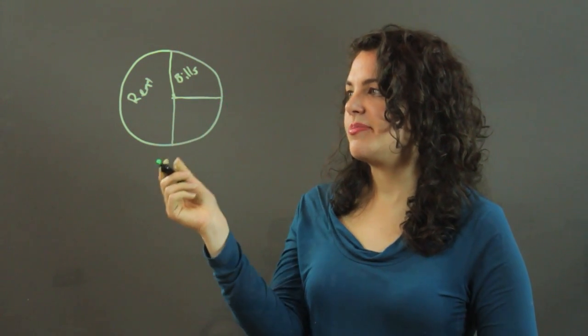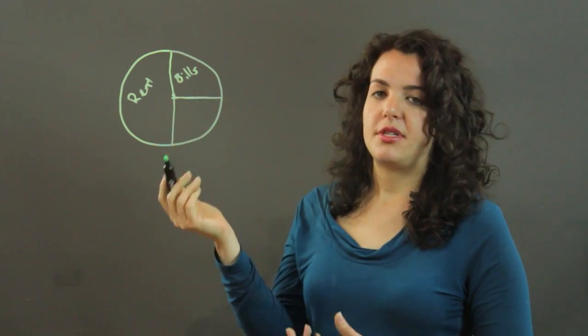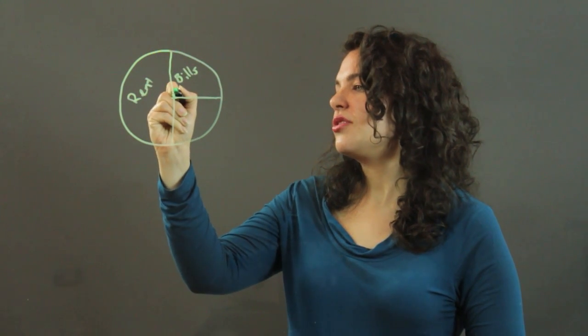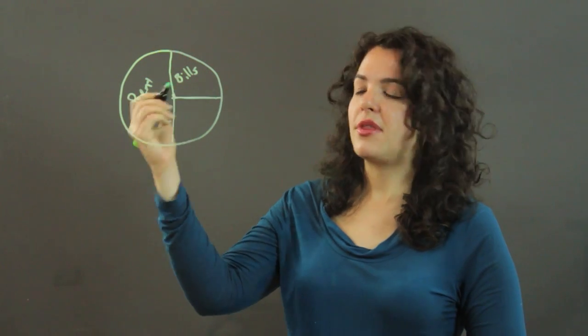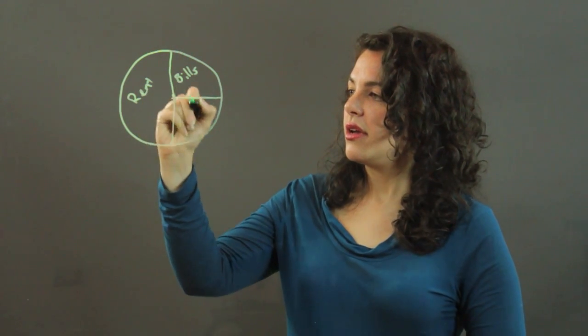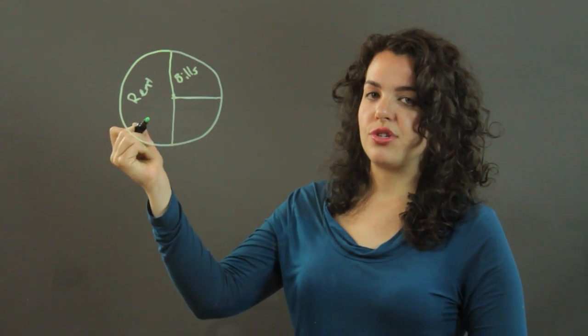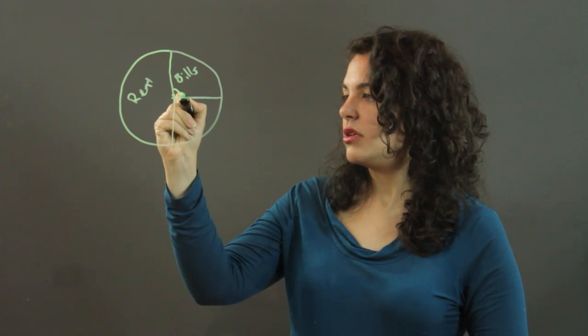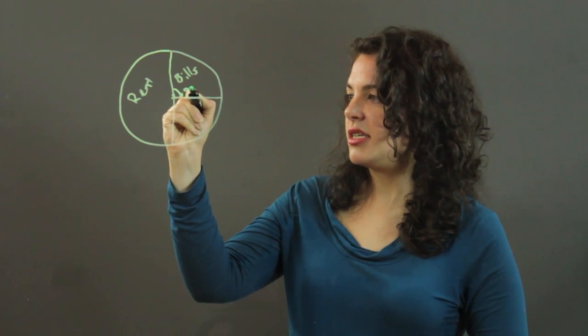To determine the percentage, say, of the bills that we're paying, you can take the degrees. Remember that a circle has an internal angle of 360 degrees. So this is a quarter, let's say we see that we've got 90 degrees here.